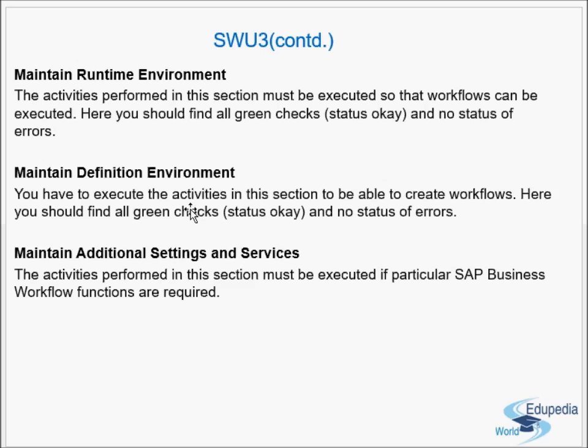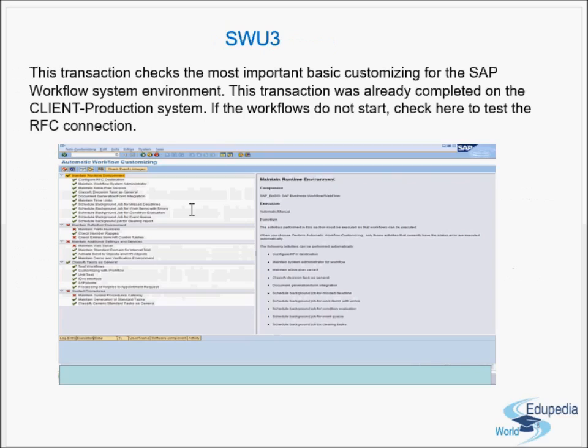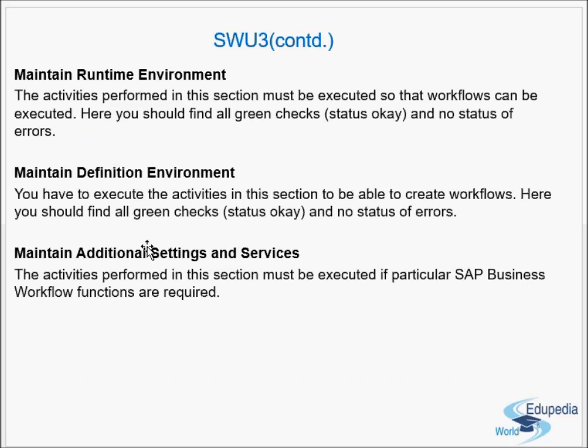The next node is Maintain Definition Environment. You have to execute the activities in this section to be able to create workflows. You should find all green check statuses and no errors here. Runtime environment helps in execution; definition environment helps in creation. Make sure you find all green ticks here as well.